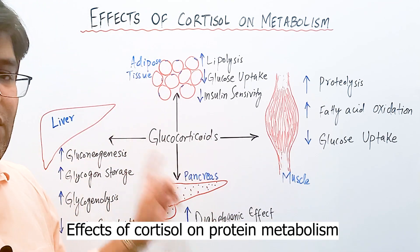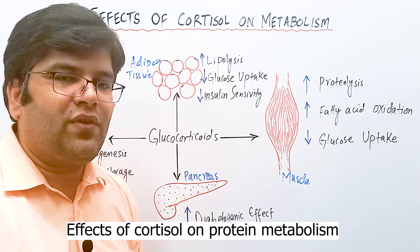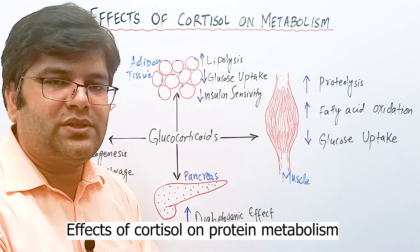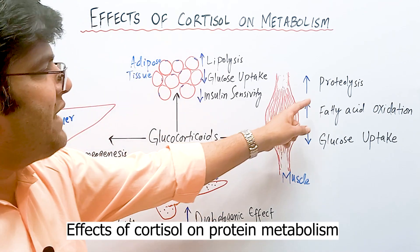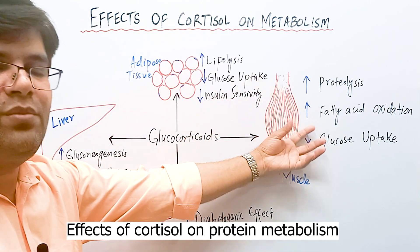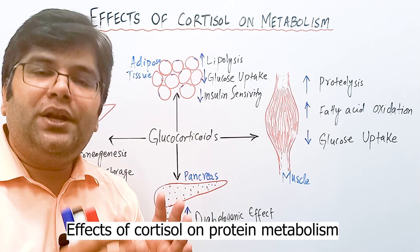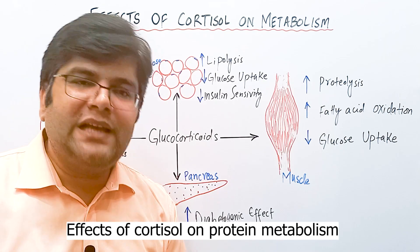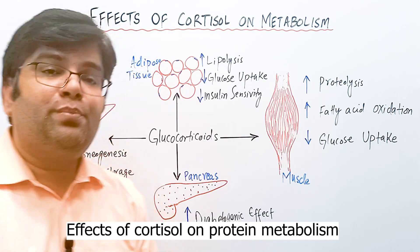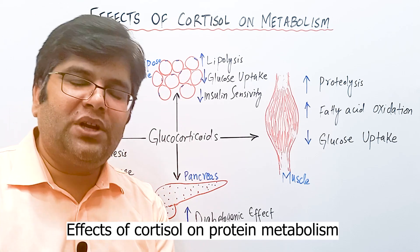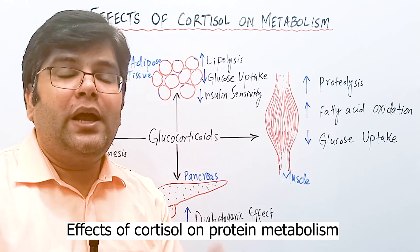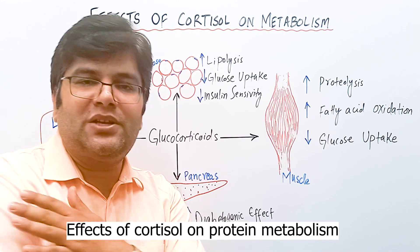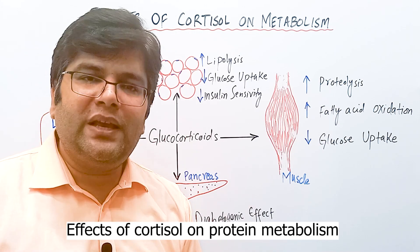Everywhere else in the body, protein synthesis is decreased, because cortisol reduces entry of amino acids into peripheral cells — just as it reduces glucose entry. However, it increases amino acid entry into liver cells, so liver protein synthesis is increased — for example, plasma proteins synthesized by the liver are elevated. At the same time, increased protein breakdown in muscles causes muscle weakness.